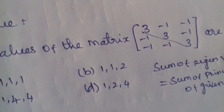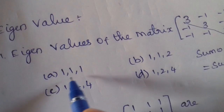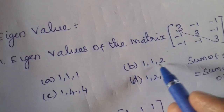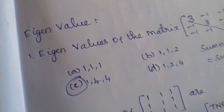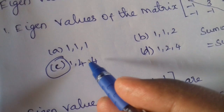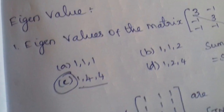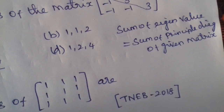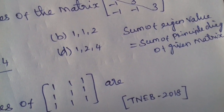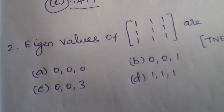The sum of the principal diagonal of this given matrix is 9. We can find: 1, 1, 3 — that's 3 total; then 4; then 1+2+3 = 7... wait, the eigenvalues are 1, 4, 4, giving a total sum of 9. So the sum of eigenvalues equals the sum of the principal diagonal, and the answer is 1, 4, 4.